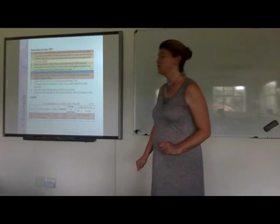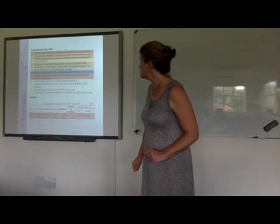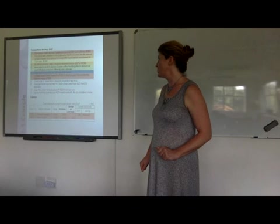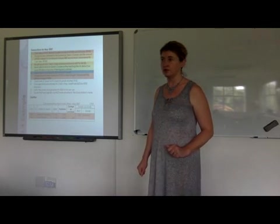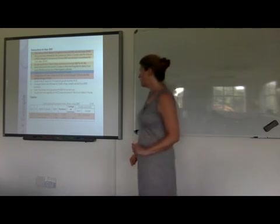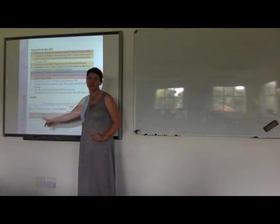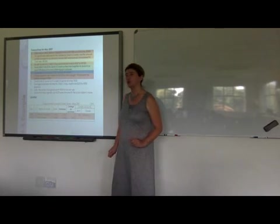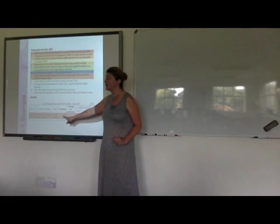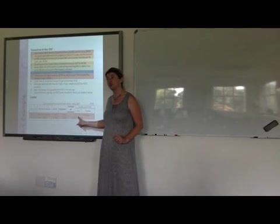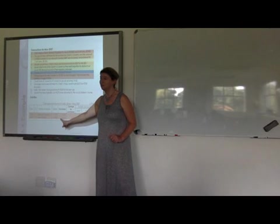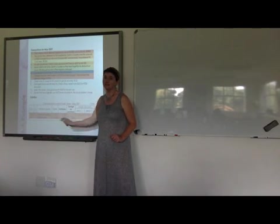Number 7: cheque issued to Alex Traders for 3,700 Rand for stock bought, which included a delivery charge of 250 Rand. I'm going to put it into my cash payments journal. The total amount of 3,700 goes into the bank column. Because I'm using the periodic inventory system, I'm showing my carriage expense separately — I put my carriage of 250 Rand in that column and then work out the difference as the purchases figure, which represents the inventory that I bought.